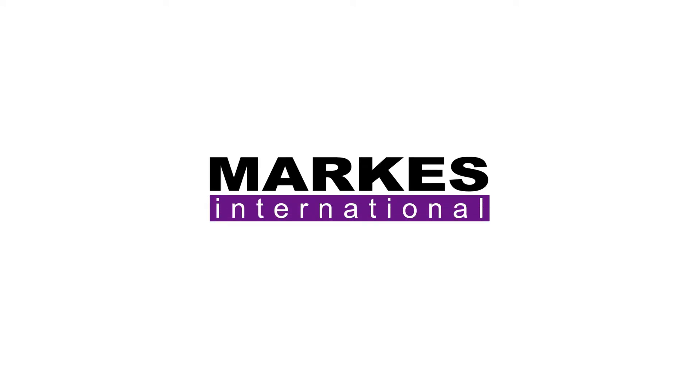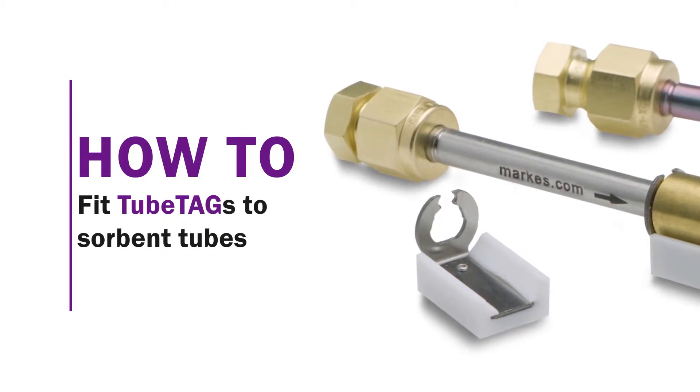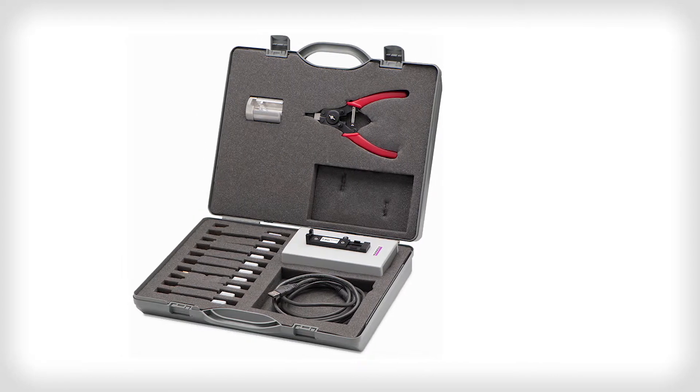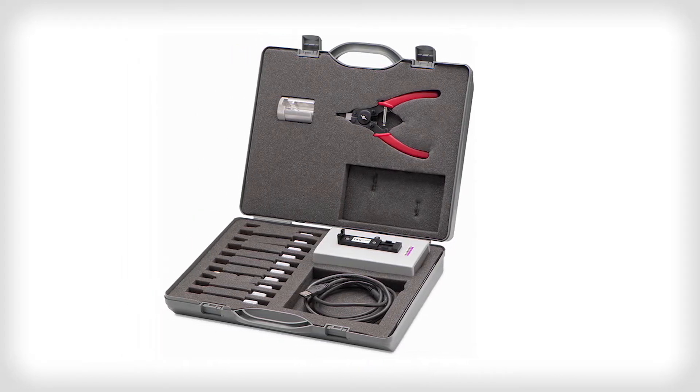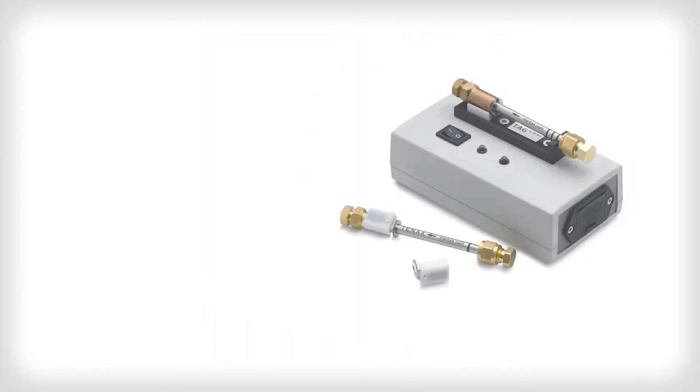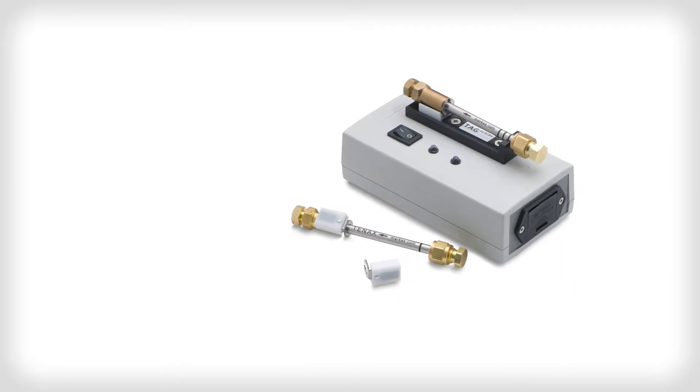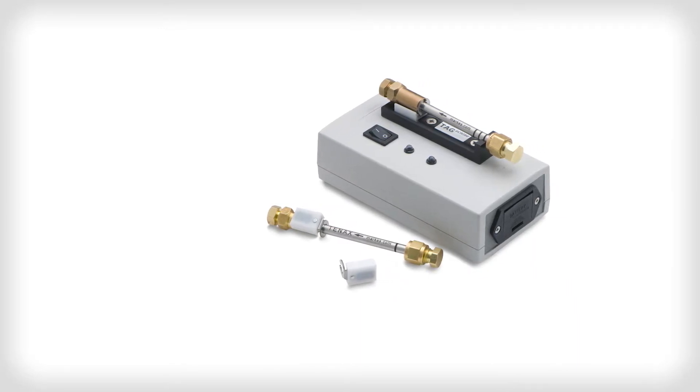The following video will show you how to fit TubeTag's sorbent tubes for information handling. TubeTag is a robust radio frequency identification tag that clips securely onto stainless steel or glass tubes and eliminates transcription errors. It allows for a chain of custody through field monitoring and lab analysis.